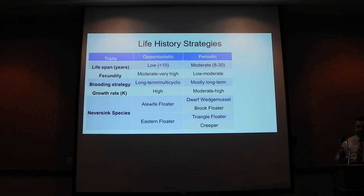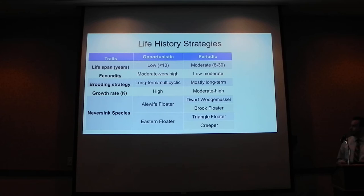Next are periodic species, which are in the middle — moderately lived, with low to moderate fecundity and moderate to high growth rates. They also use the long-term brooding strategy. These are our most abundant group in the Neversink, including the boring wedge, the Brook Floater, the kindle floater, and the creeper.